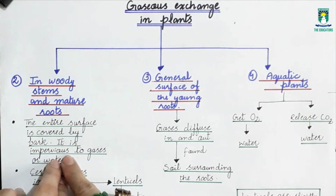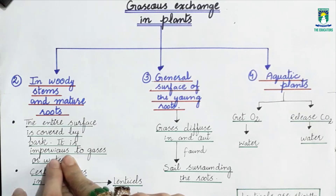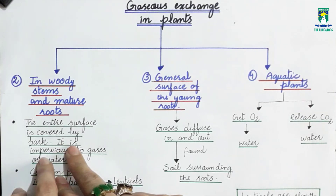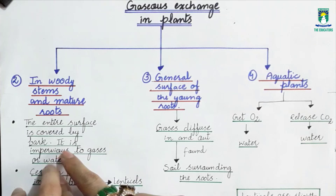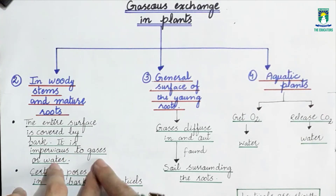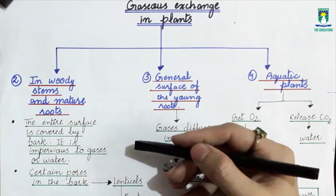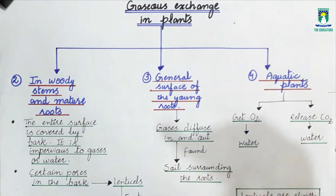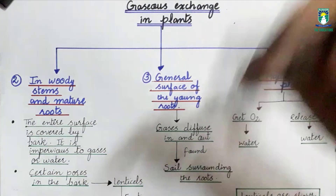The bark is impervious to gases and water. Impervious means impermeable — it does not allow any gas or water to pass through or cross the bark.